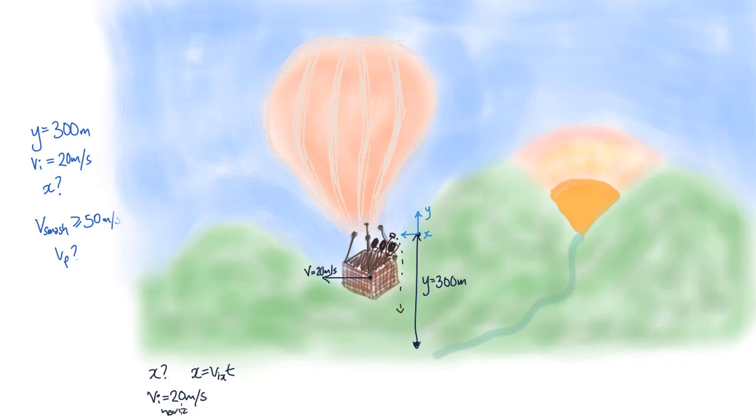Now for t, we know the total displacement is 300 meters, the initial vertical velocity is 0 meters per second, and the acceleration is 9.8 meters per second squared. So we can use our projectile motion equation: y = 300 meters.